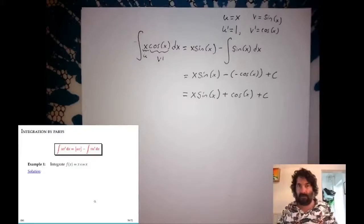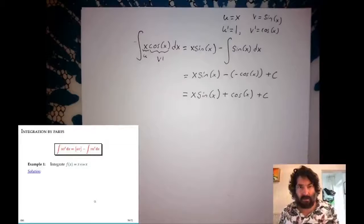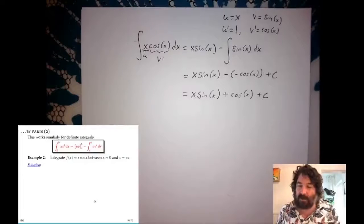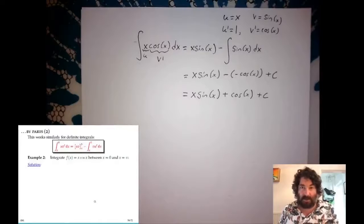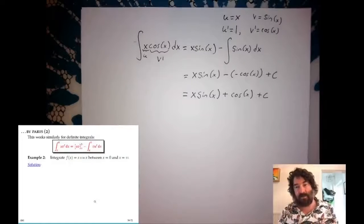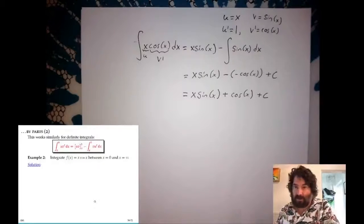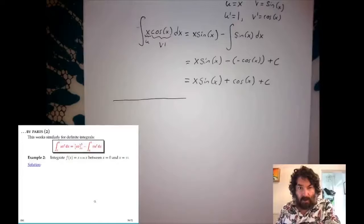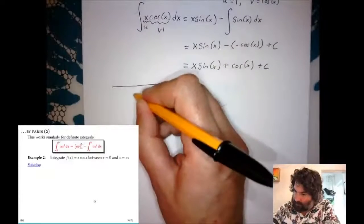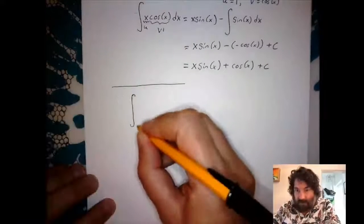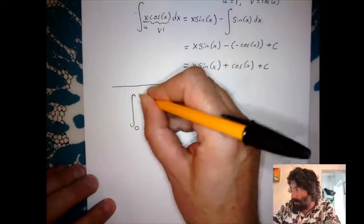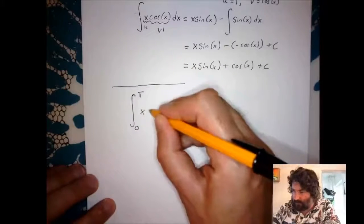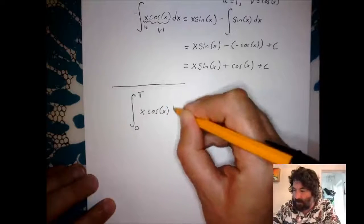Now, using the same integrand, I want to point out that we can also do definite integrals more directly — finding the antiderivative and then plugging in the limits using integration by parts. In this example, we want to find the definite integral of x·cosine x between 0 and π.